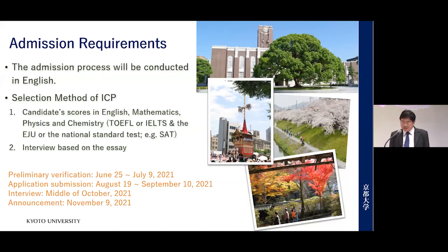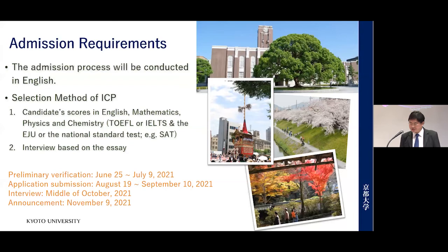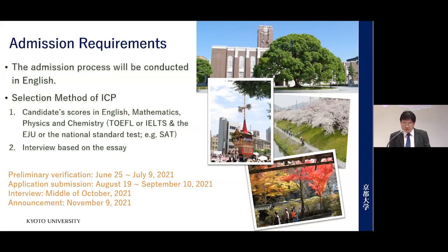Regarding the basic admission requirements, the process is conducted in English. Students have to prepare documents in English, and the admission process starts from your initial contact. Details are available on our website. The basic selection method for ICP considers candidate scores in English, mathematics, physics, and chemistry — for example, TOEFL and IELTS. If you have an EJU test score, it would be useful, or we can use other national standardized tests.